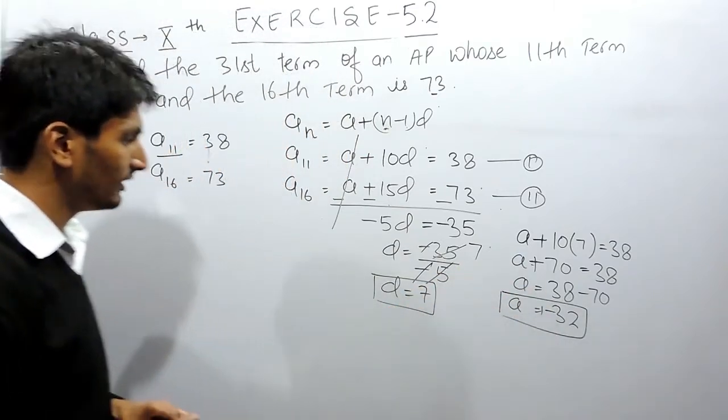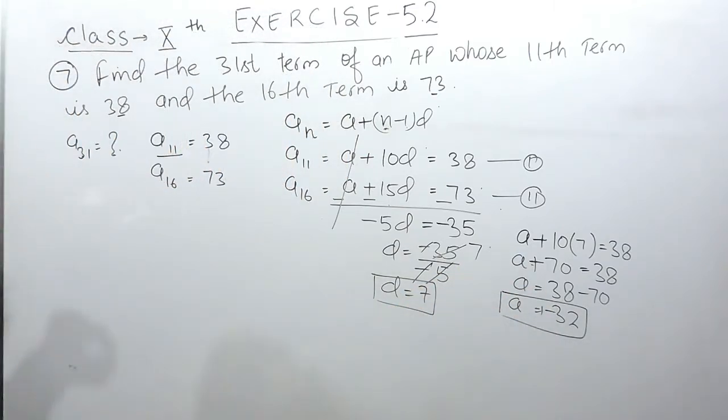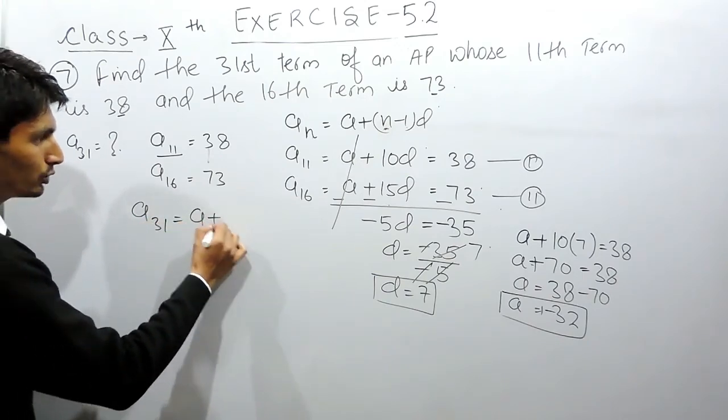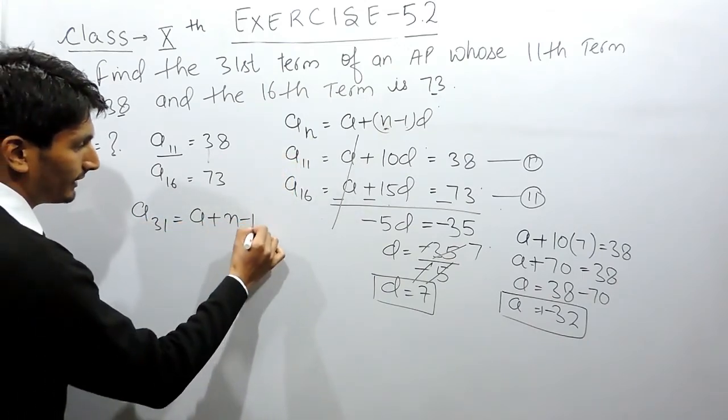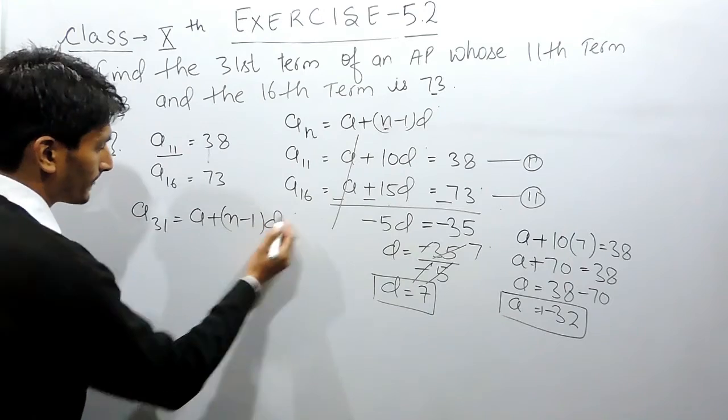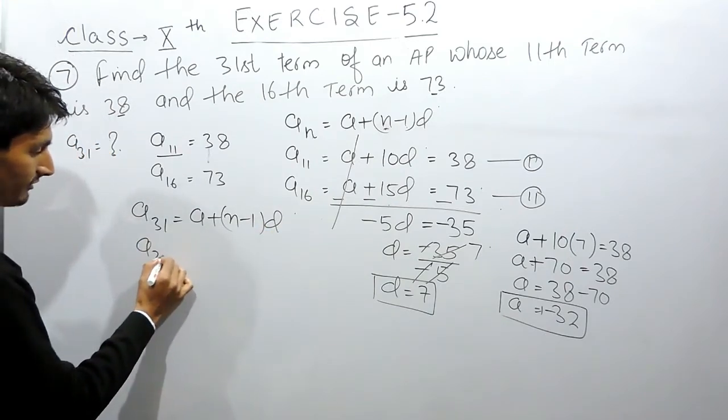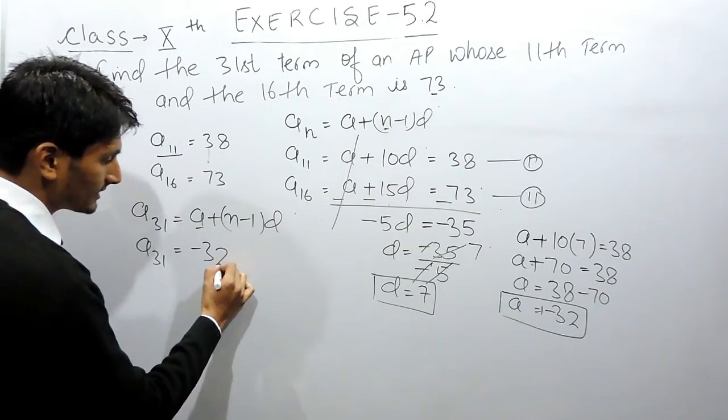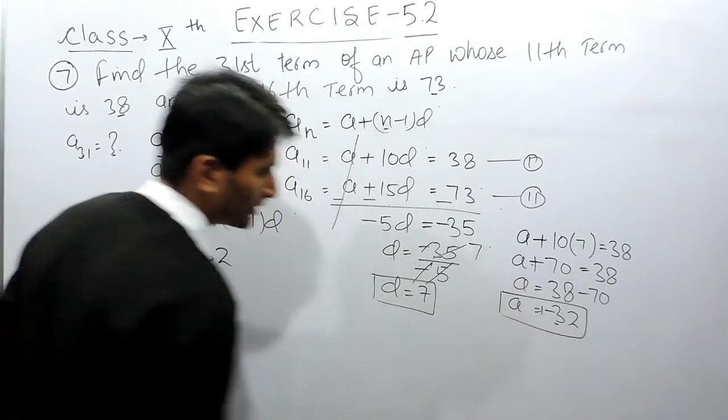And we want to find out the value of the 31st term. So the 31st term again will use the same formula: a plus n minus 1 into d. We have to find the 31st term. The first term is given to you as minus 32, this is the first term.